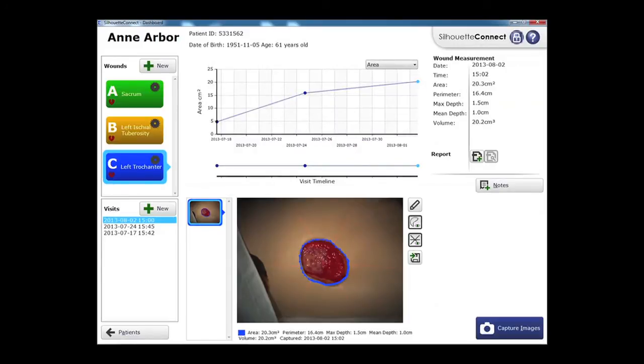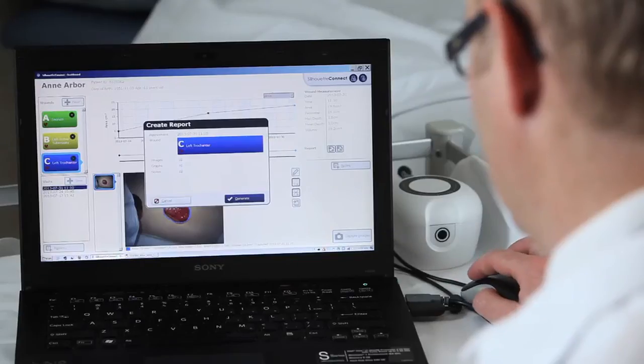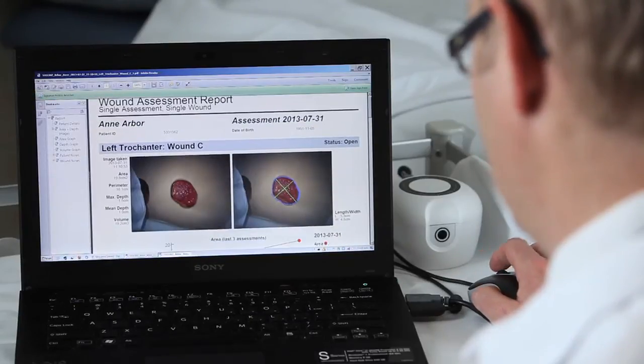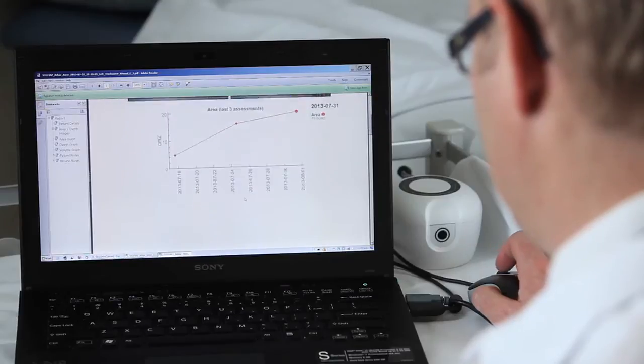So at this stage we can now see the wound has progressed and has actually been getting worse in this example here. At this stage we can create a PDF report which will summarize all the features of this wound.